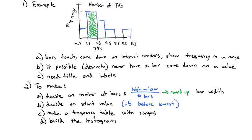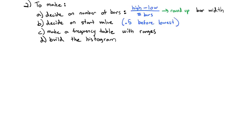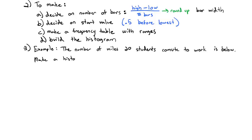So if that's the method, let's see if we can go ahead and actually do that with an example. The number of miles 20 students commute to work is below. We are going to make a histogram with 5 bars to represent the data.